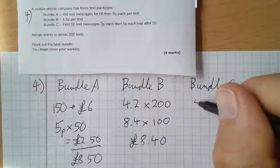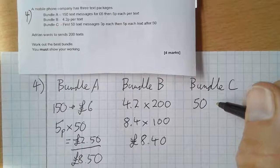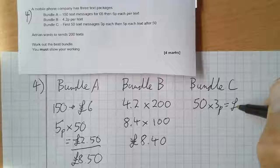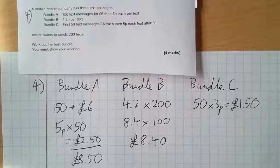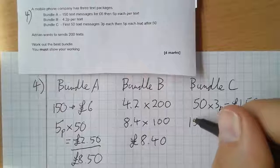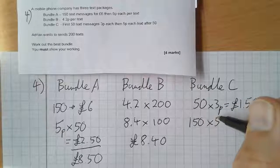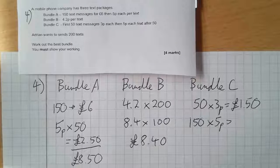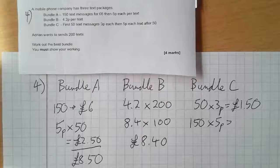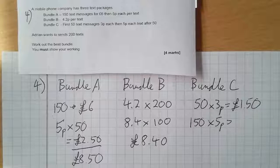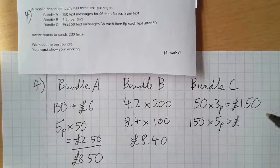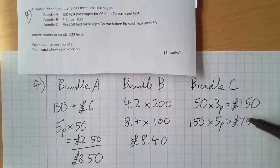Bundle C: So the first 50 text messages at 3p each. So 50 times 3p - that gives me £1.50. And then the rest of them at 5p. So I'm gonna need another 150 at 5p. Well, 150 times 5 would be 750p, so £7.50.